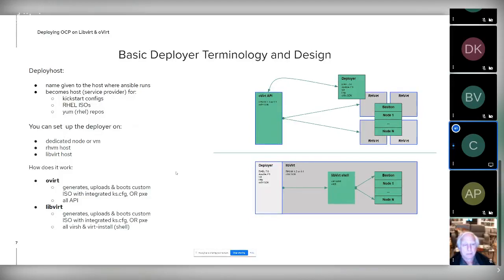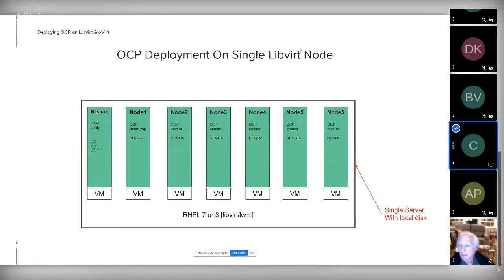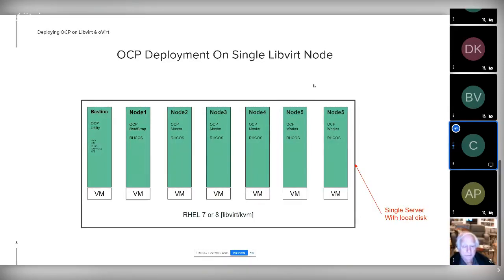OpenShift deployment on a single libvirt node: OpenShift up until about version 4.5 required five or so dedicated machines to run the cluster — three masters and at least one worker node. You'd also have a bootstrap node to boot your cluster, and typically a utility server called the bastion to manage all the services related to your cluster. That's six to seven machines to deploy. Once it's all running, you can delete the bootstrap and have a running cluster.